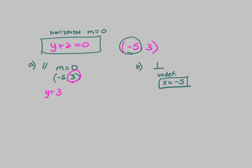If you plugged in 0, you'd get y minus 3 equals 0 times x plus 5, and you'd get y minus 3 equals 0, and you'd get y equals 3. So you'd get there eventually anyways, but it's obviously faster to just remember: if it's horizontal, it's a y equals, and if it's vertical, it's an x equals.